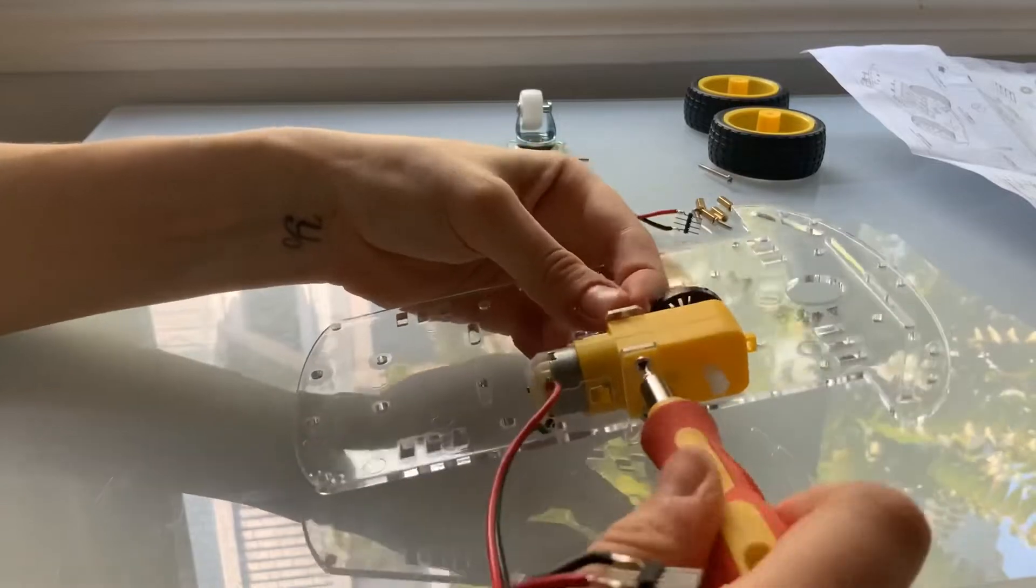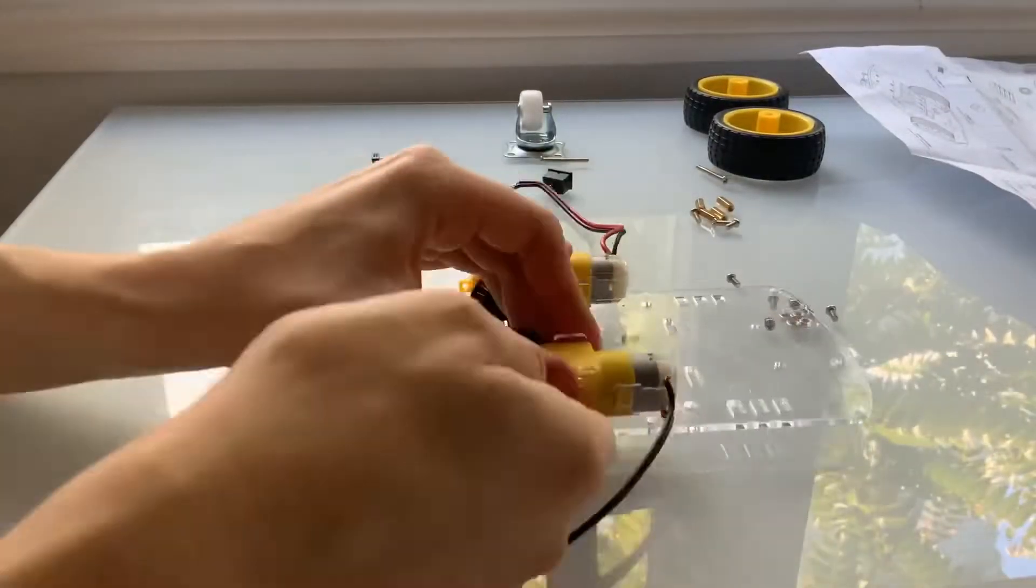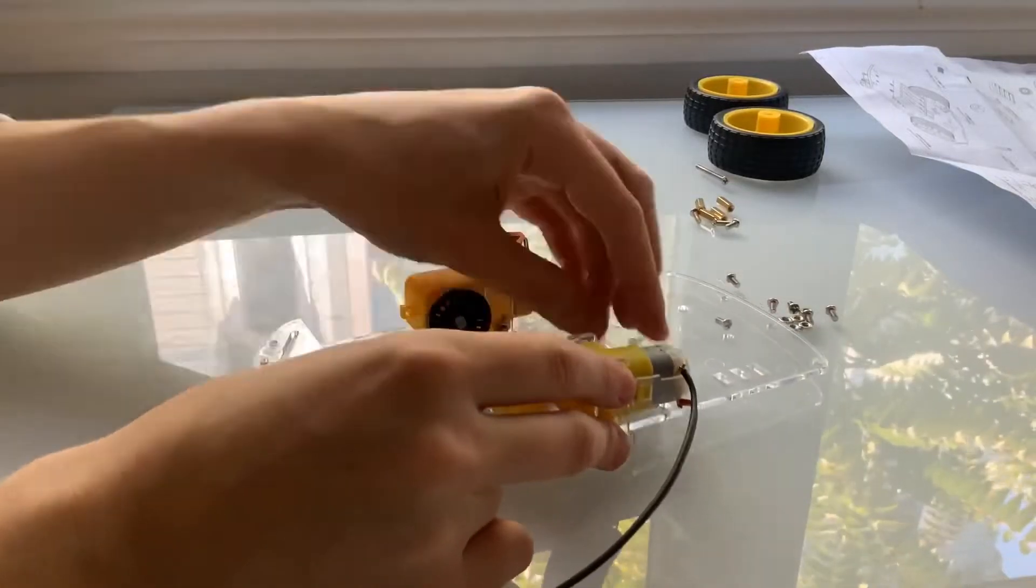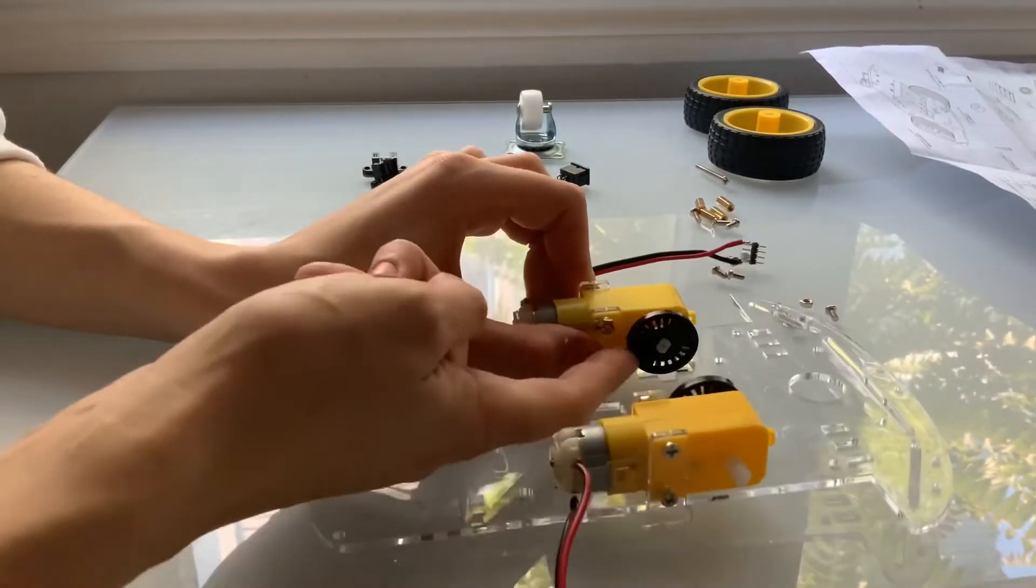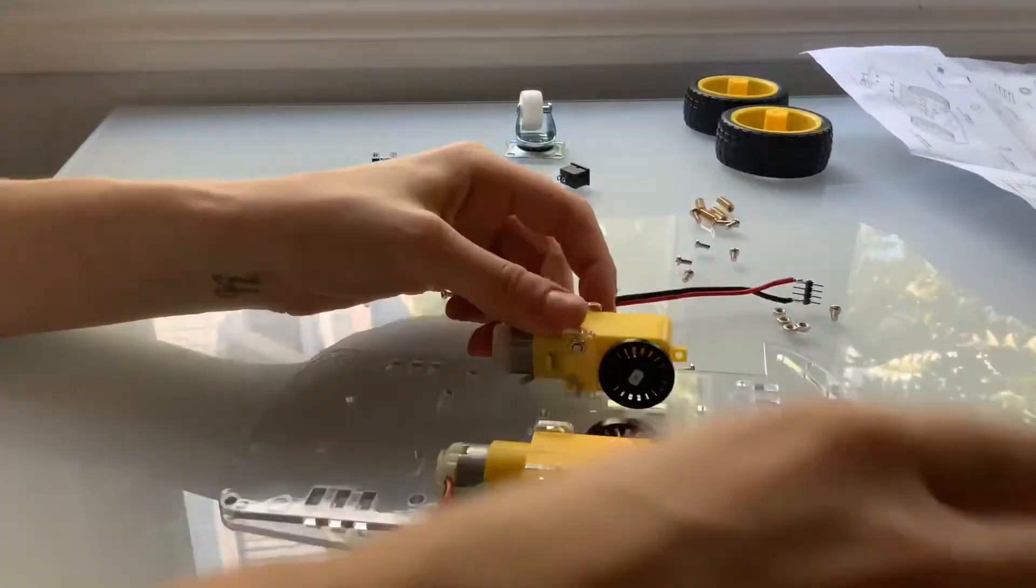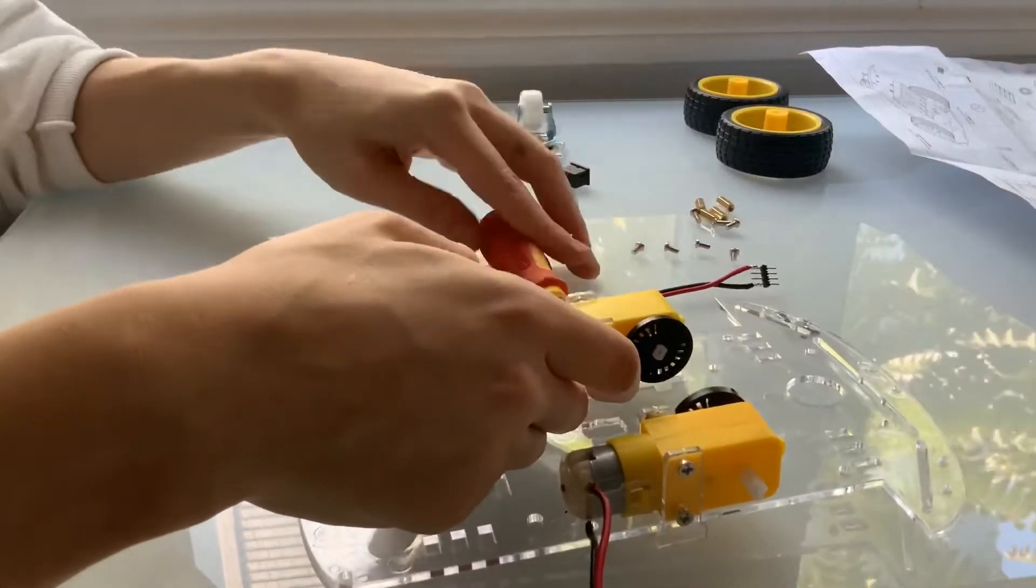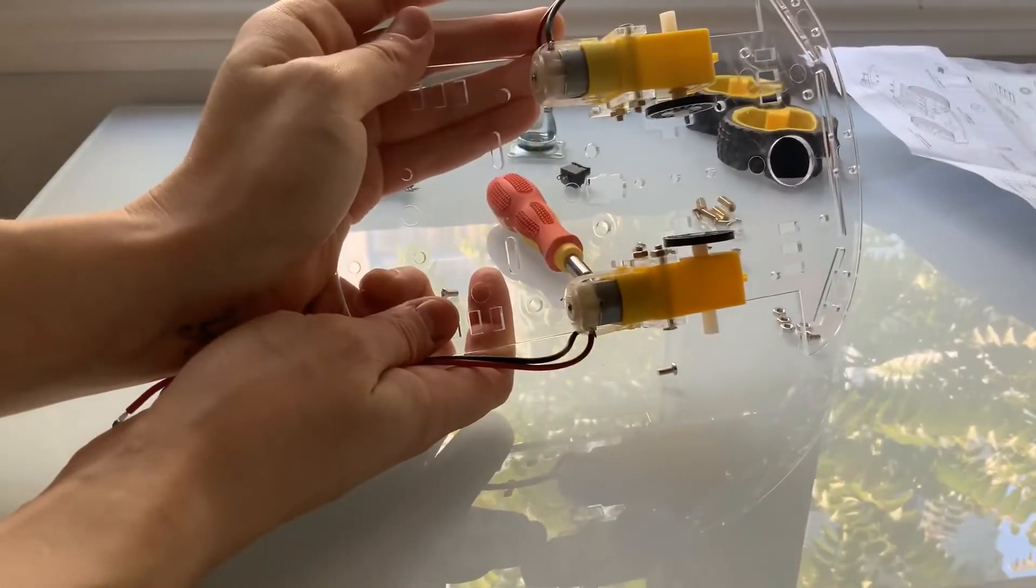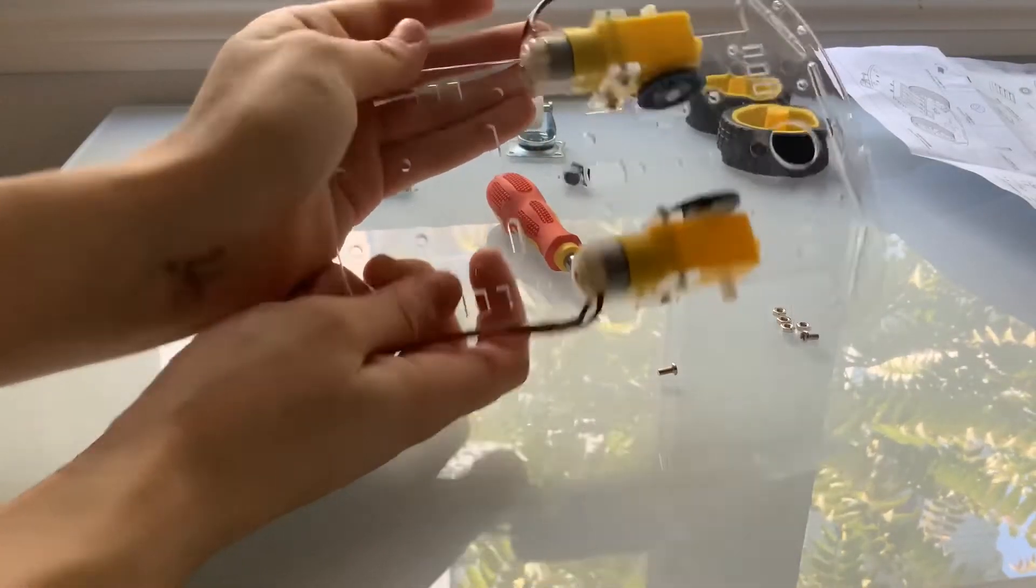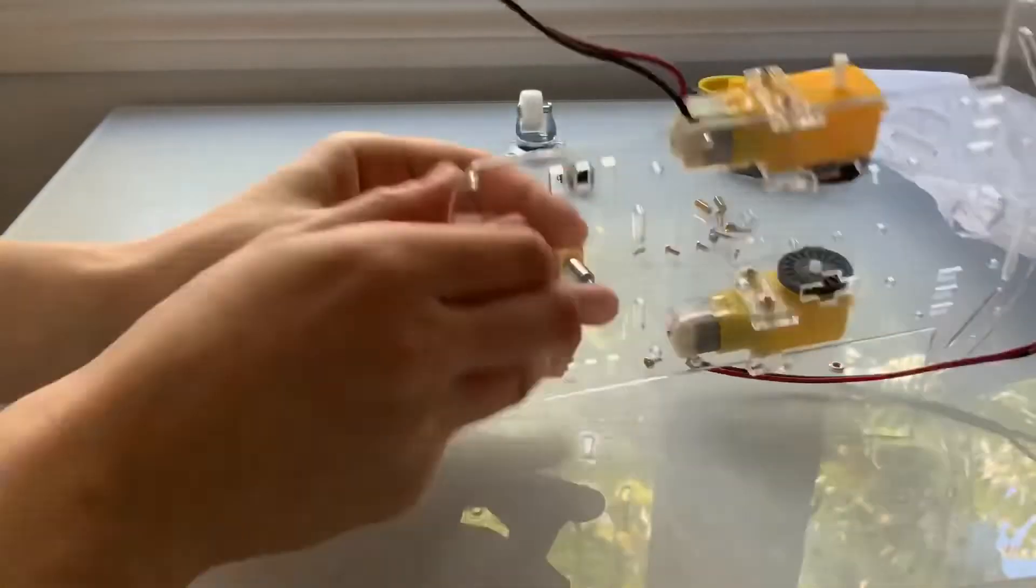Now that we're done with the motor wheels, we can move on to the caster wheel. This is where you'll use the standoffs and the smaller screws.